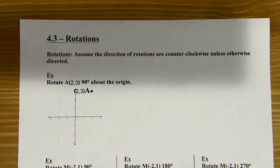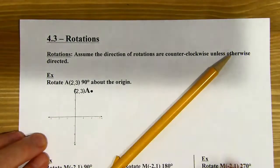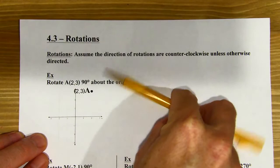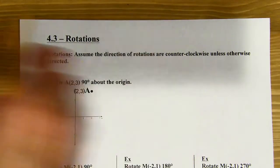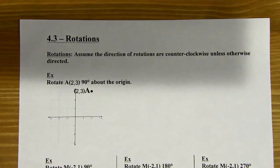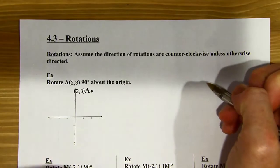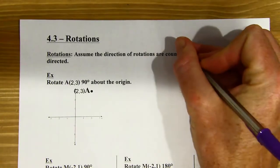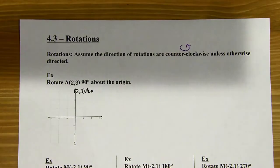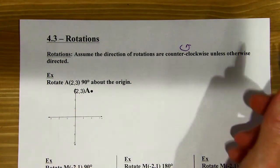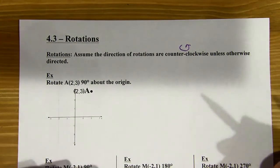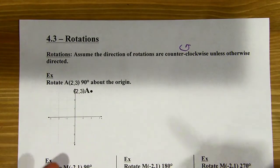A rotation is a spin. You can spin in different directions, but the standard way is counterclockwise. So if a problem just says 'rotate,' like on this first example, it means counterclockwise. Sometimes it might ask you to go clockwise, but otherwise assume counterclockwise.